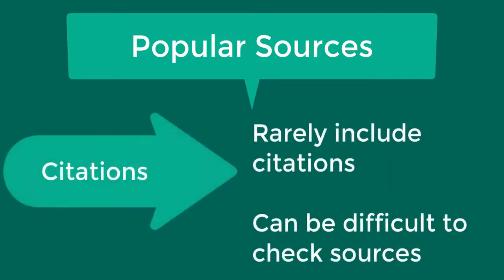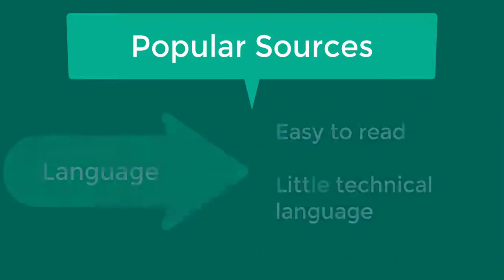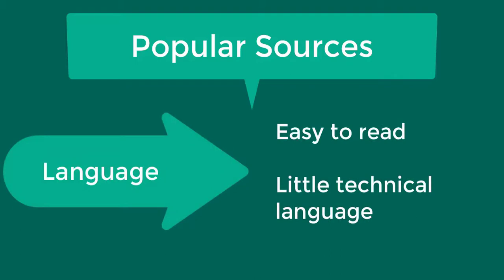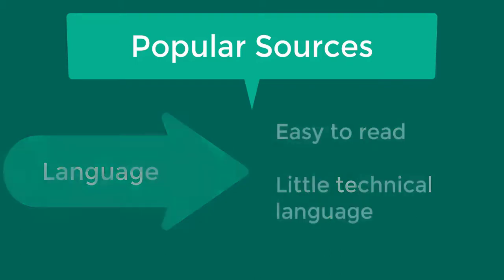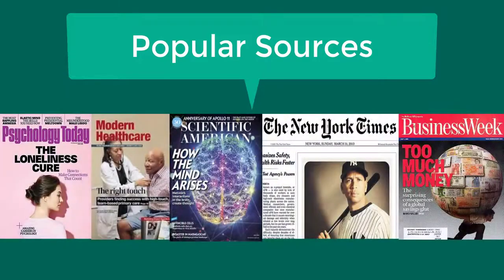Popular articles rarely include citations, so the reader might not know the sources where the author found their information. Their appearance features extensive advertising and colorful covers for marketing. The language used is easy to read, with little technical language, and specialized terms are often defined. The length is usually shorter than scholarly articles, ranging from about 200 words to a few pages. These are some examples of popular sources.